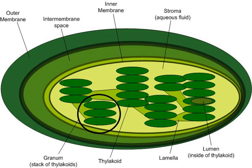Channel proteins called porins in the outer membrane allow free diffusion of ions and small proteins about 5,000 Daltons or less into the IMS. This makes the IMS chemically equivalent to the cytosol regarding the small molecules it contains.